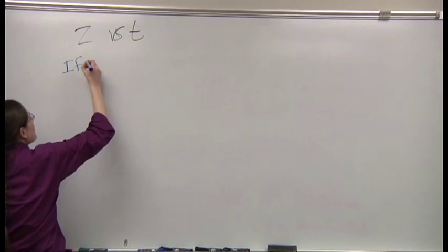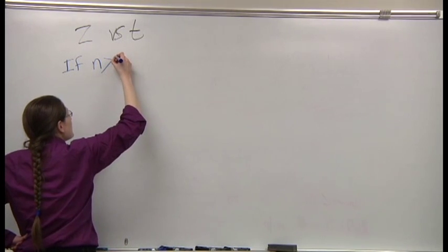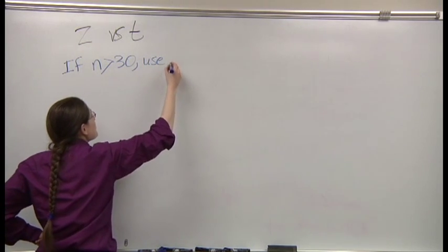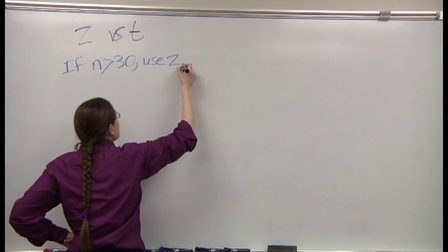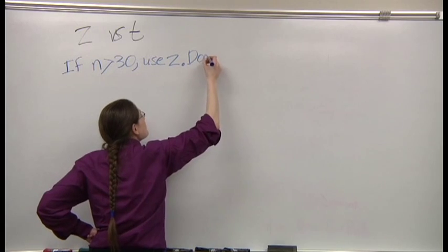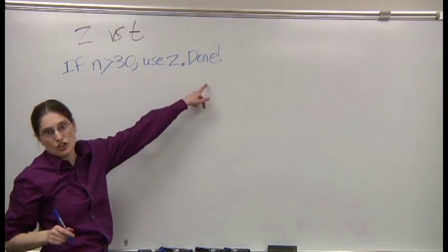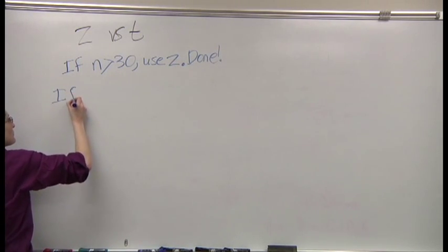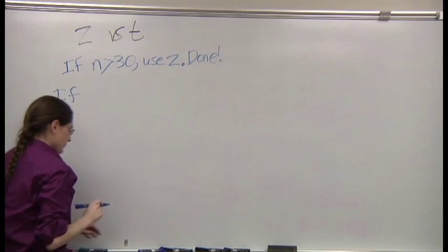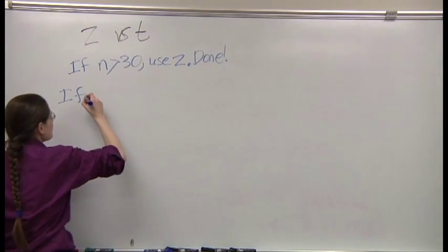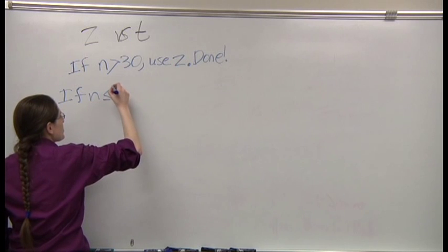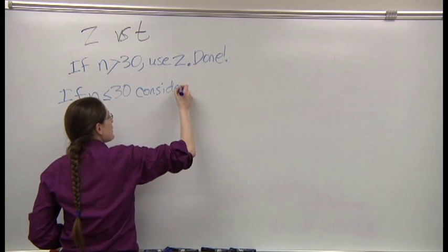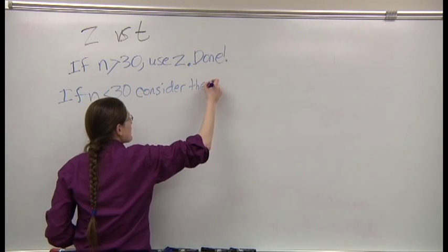If n is greater than 30, use Z and you're done with that decision.